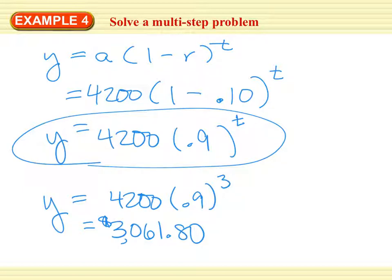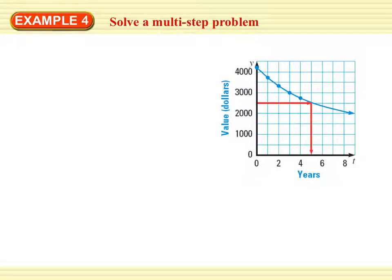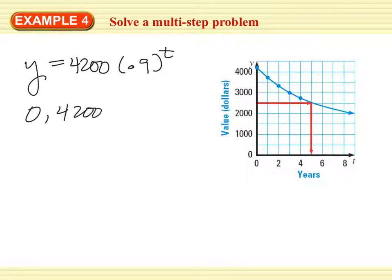Now we're going to graph it. To graph it, we know y equals 4,200 times 0.9 to the t. So I can graph it 0, 4,200, and 1, comma, handy dandy calculator, 4,200 times 0.9, 3780. So I can put those points in, and I can even pick a few more points to make it a smooth curve so I can actually read it. So I've got my curve here. That's my graph.